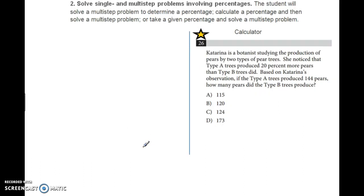The second type of problem involves percentages. Actually, in my other classes, this was the most commonly missed problem. The thing you need to look out for here is that tree A produced 20% more pears than tree B. A lot of students calculated 20% of 144, subtracted that, and got the wrong answer. The correct answer was B.